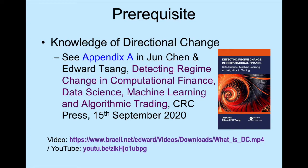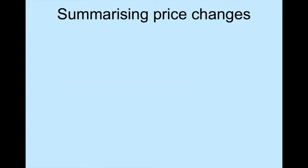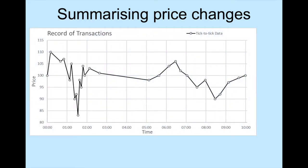First, let us look at how prices are summarized. The time and price of every transaction in the market are recorded. These are called tick-to-tick data. It is important to note that transactions take place at irregular times. In this artificial dataset, there are nine transactions within one particular minute and no transaction within two minutes.